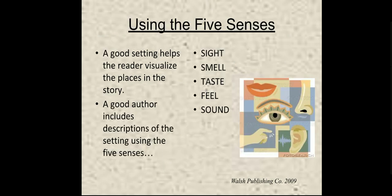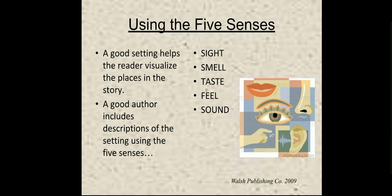We need to use our five senses in order to describe the setting. We have sight, smell, taste, feel, and sound. Out of these five, three are very important: sight, feel, and sound. Sight is important because eyes are very powerful compared with all the other senses — it can picture many things and has greater appeal and attraction to our mind. And then feeling — we can also feel things.